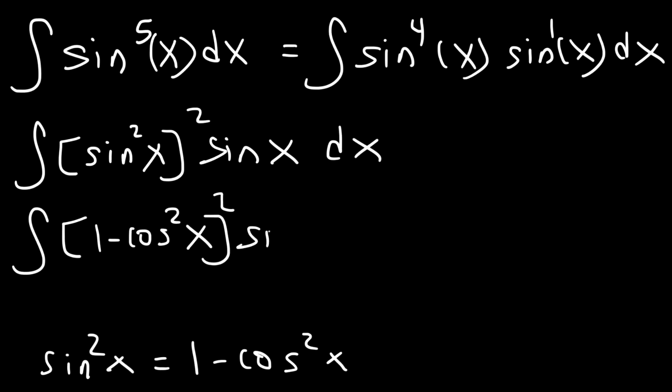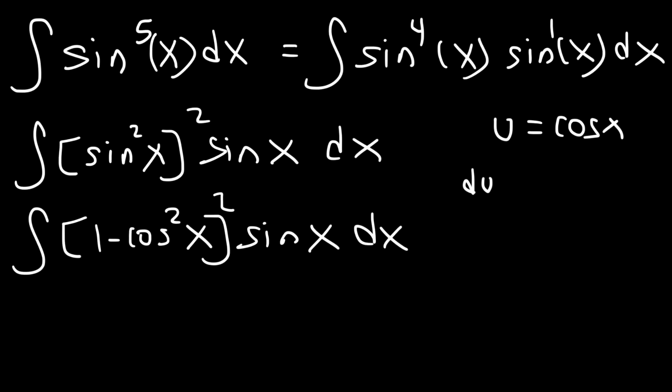And so we have this expression. Now we can use u-substitution to get the answer. So we're going to make u = cos(x) in order that du = -sin(x)dx. Solving for dx, it's going to be du divided by -sin(x).